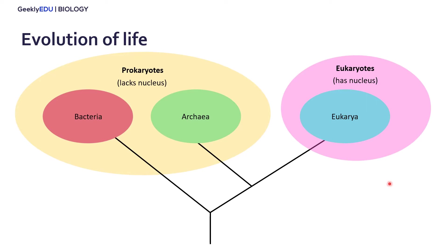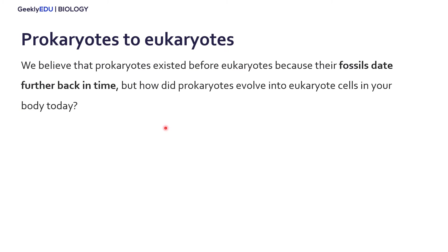When we're thinking about how eukaryotes evolved, we have to look at what happened throughout history — where did we go from prokaryotes to eukaryotes? We believe that prokaryotic cells existed before eukaryotic cells because their fossils date further back in time and their structures are more primitive than eukaryotic cells.